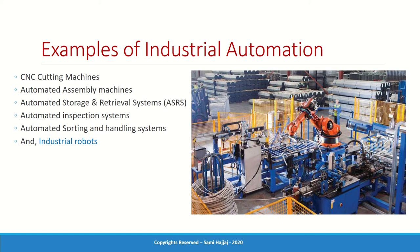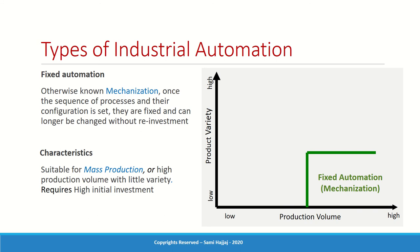There are two major types of industrial automation, and they depend on the volume of production. Fixed automation — otherwise known as mechanization — is the classical form. Here, the sequence of operations and equipment have been pre-designed and set up, running at very high volume. Because of the high investment costs and high volume required, this system is quite fixed — you cannot easily change the product.